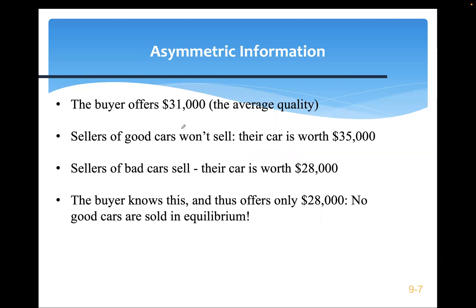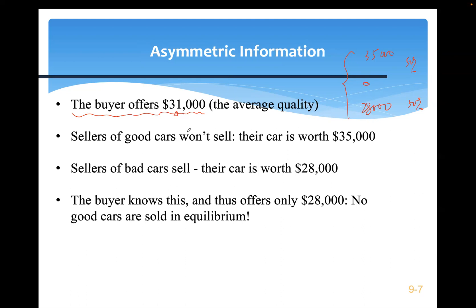The buyer is willing to offer $31,000 — the average of $35,000 and $28,000 — because they face a 50/50 chance of getting either car. Paying $35,000 risks getting a bad car worth only $28,000, but offering $28,000 would attract only the worst car. So the buyer offers the average price of $31,000.